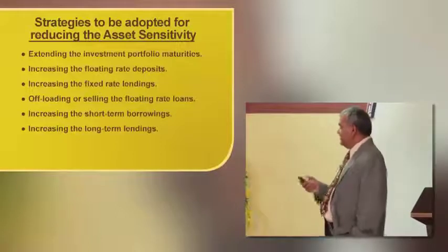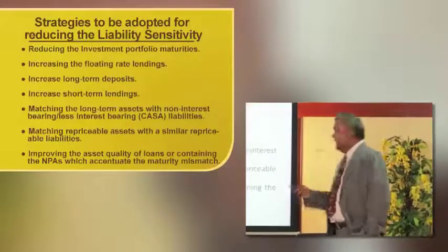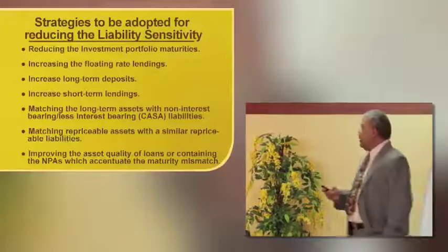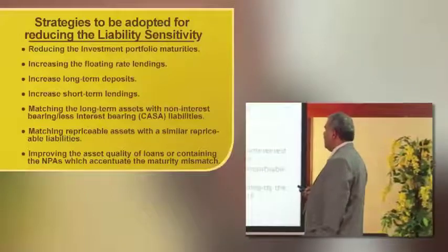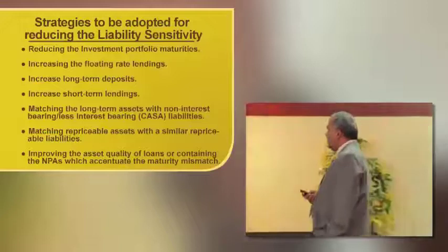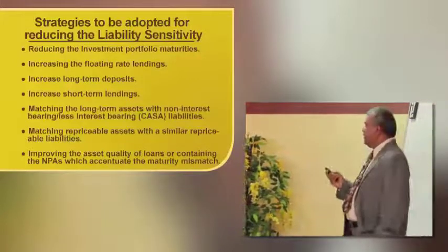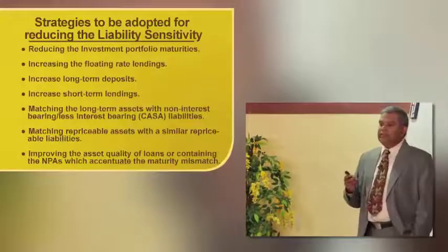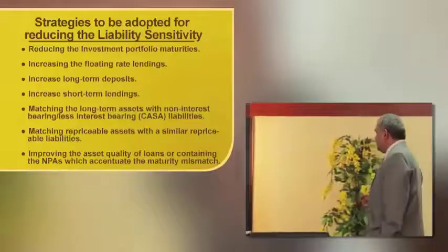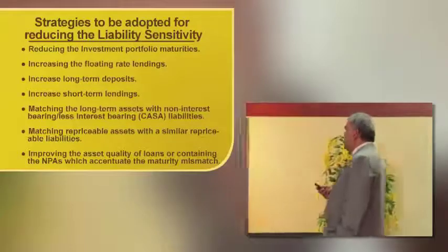To reduce liability sensitivity, the strategies include: reducing the investment portfolio maturities, increasing floating rate lending, increasing long-term deposits, increasing short-term lendings, matching long-term assets with non-interest-bearing or less-interest-bearing CASA liabilities (current account and savings account), and matching repriceable assets with same repriceable liabilities — where the interest rate gets hedged automatically, called a natural hedge. Improving asset quality of loans is also important, since more performing loans generate more income, whereas loans turning into NPAs lose their earnings.